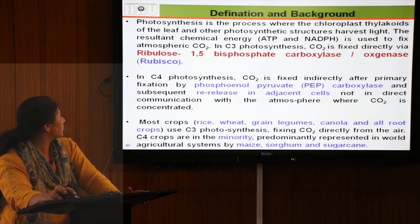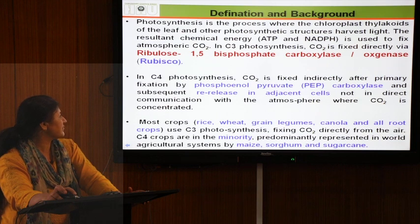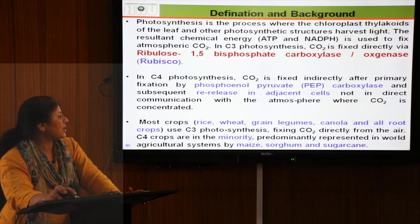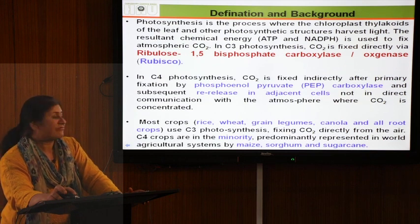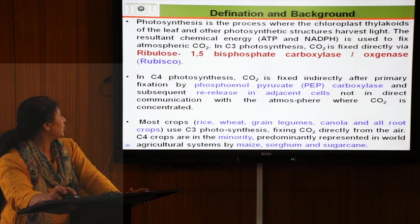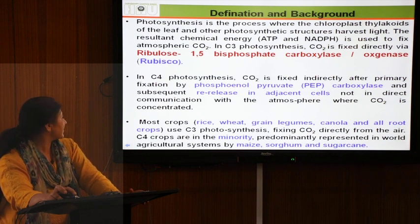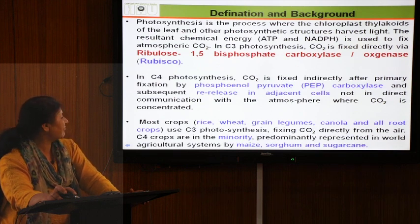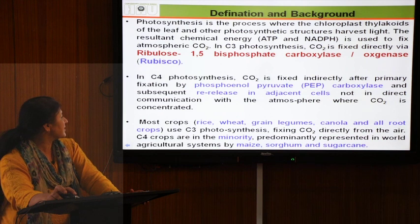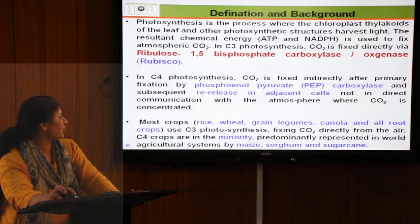The full form of rubisco is ribulose-1,5-bisphosphate carboxylase/oxygenase. Rubisco can act as both a carboxylase and an oxygenase depending on the concentration of CO2 and oxygen. In C4 photosynthesis, CO2 is fixed indirectly — first by another enzyme called PEP carboxylase, whose full form is phosphoenolpyruvate carboxylase.